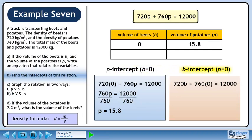At the b-intercept, p is 0, so plug in 0 for p. This gives us 720b equals 12,000. Divide both sides by 720. The value of b is 16.7. Let's record the b-intercept in the table.